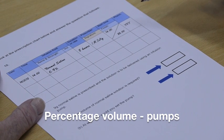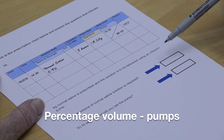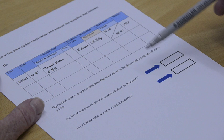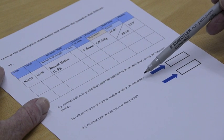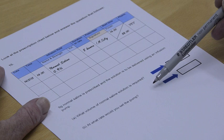All right, number 10. There's another double-barrel question here. Again, we've got to find out what the volume of this solution is required, and this time it's a pump.